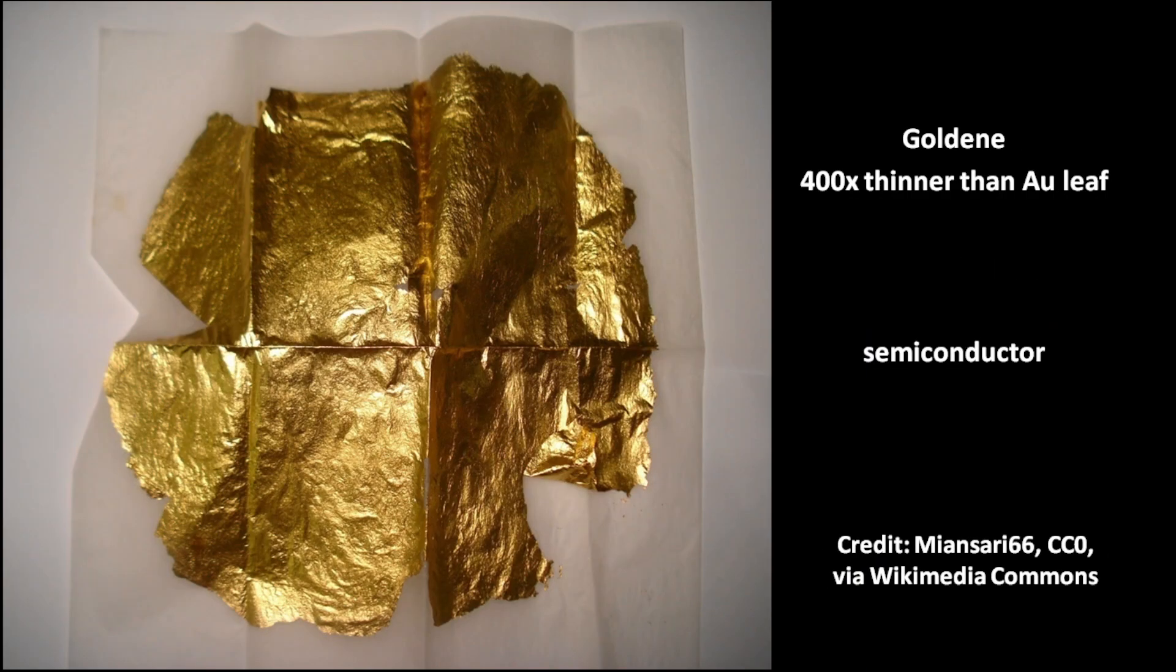The nanosheets of goldene have a width of up to 100 nanometers. They are about 400 times thinner than the thinnest gold leaf on the market. Goldene is a semiconductor. Its valence band maximum is 50 meV below the Fermi level.